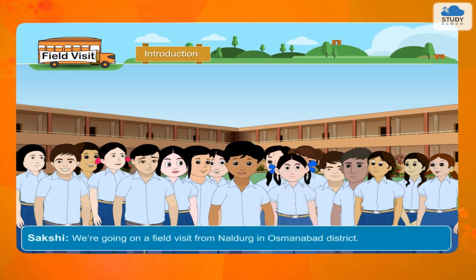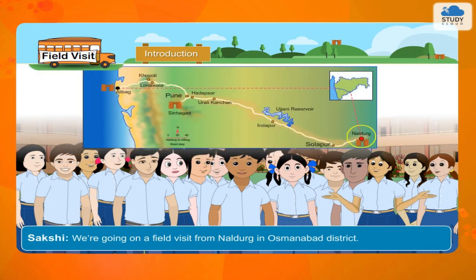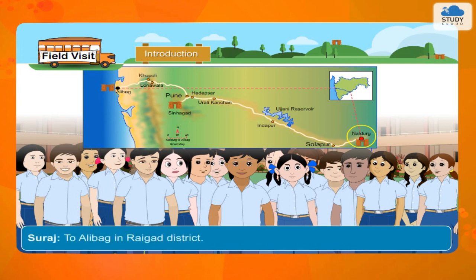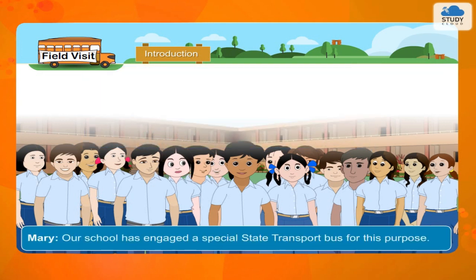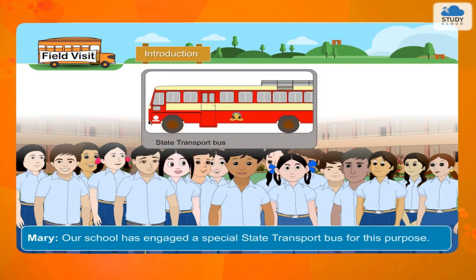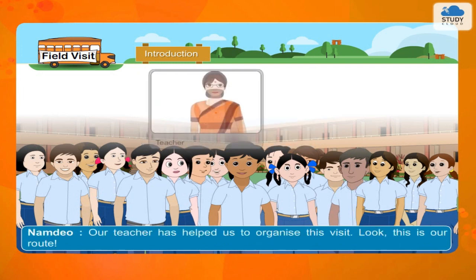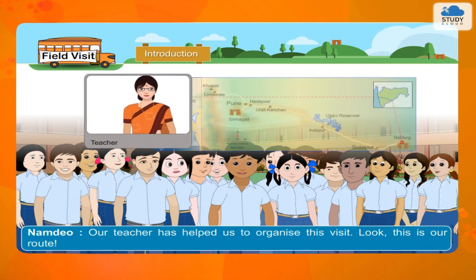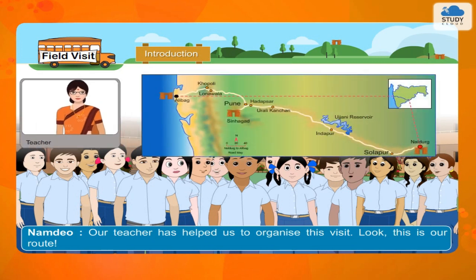Sakshi: We are going on a field visit from Naldurk in Osmanabad district. Suraj: To Alibag in Raigar district. Mary: Our school has engaged a special state transport bus for this purpose. Namdev: Our teacher has helped us to organize this visit. Look, this is our route.